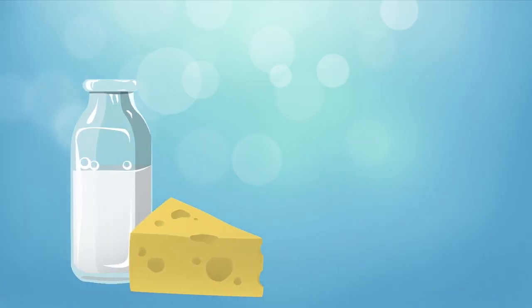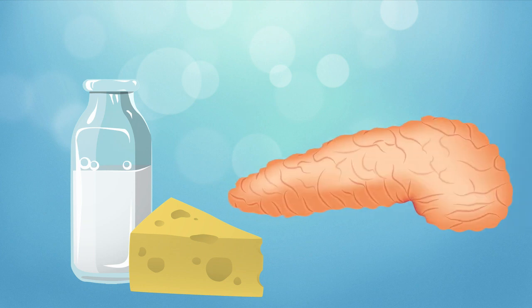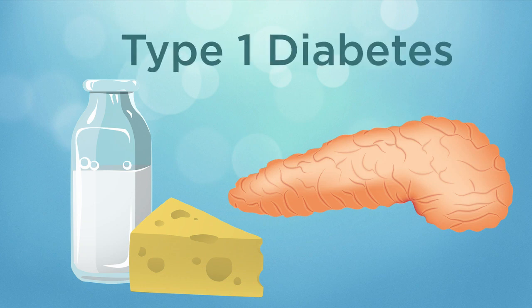For instance, there are sequences on the milk protein beta-casein that are similar to the beta cells of the pancreas. When the body gets these two confused, it attacks the pancreas, resulting in type 1 diabetes. So there's a link between milk and type 1 diabetes.